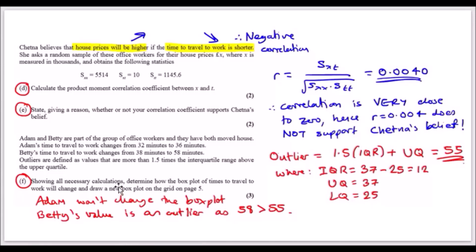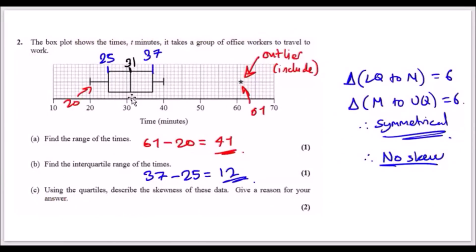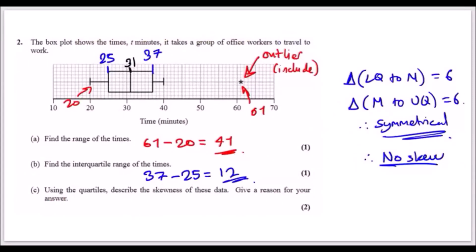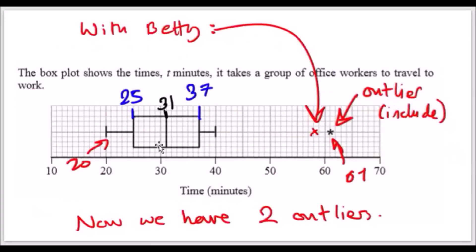Let's look at the question: showing all necessary calculations, determine how the box plot of times to travel to work will change, then draw a new one. Adam got 36. Now 36 is actually between 31 and 37, so it's between these ones, so it doesn't really affect it. It's within the bulk of the distribution. However, Betty's value is an outlier as 58 is bigger than 55, so it'll be on this side. I went ahead and drew this here. Actually, I copied and pasted from the first one and just stuck an x there because all the values should be the same. You just plug an x there and you're done. Now we have two outliers.